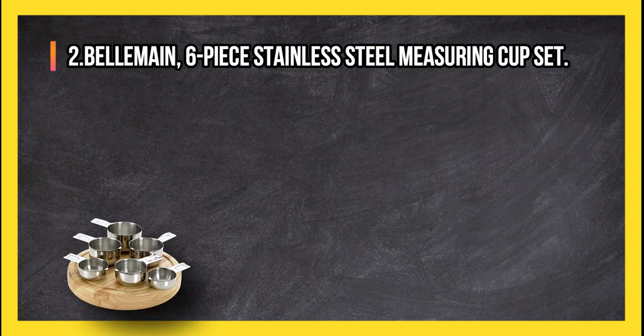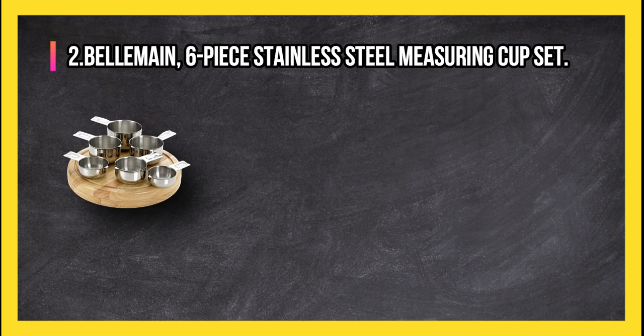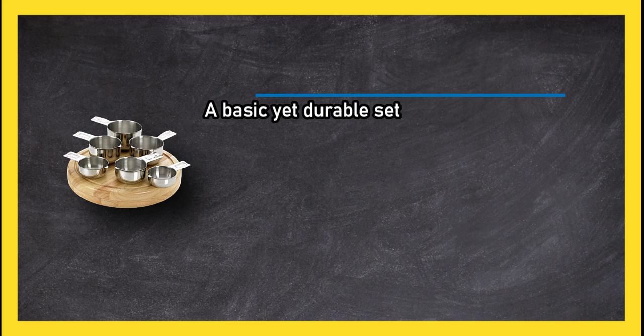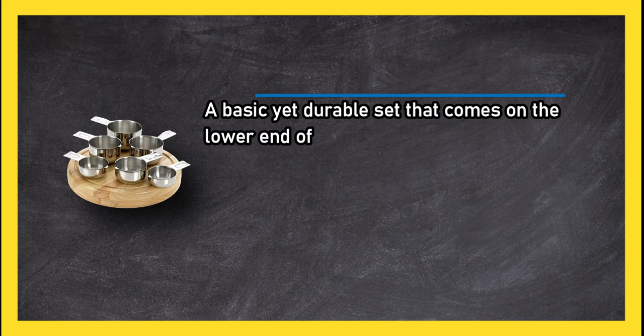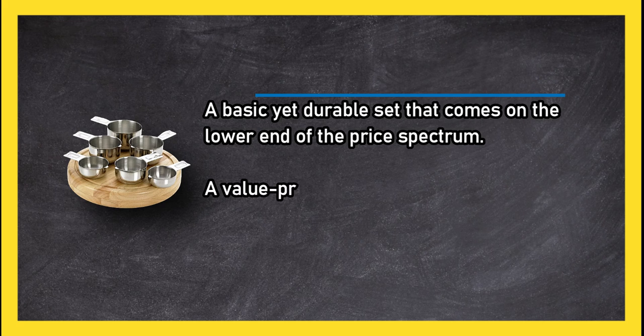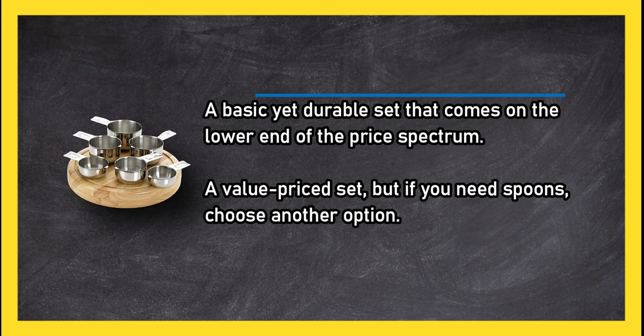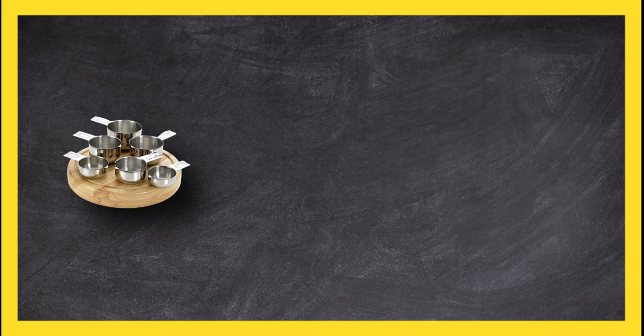At number two, Belmain six-piece stainless steel measuring cup set. A basic yet durable set that comes on the lower end of the price spectrum. A value-priced set, but if you need spoons, choose another option. Best for small spaces, though the set lacks spoons.